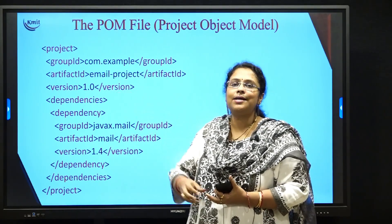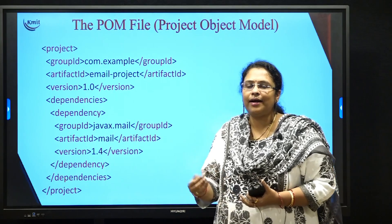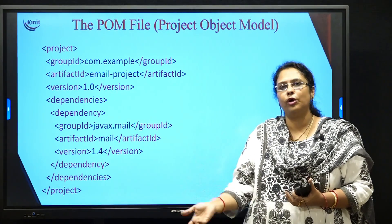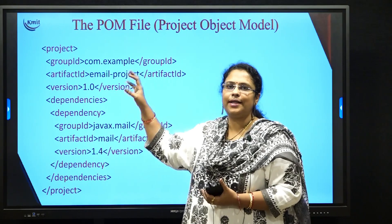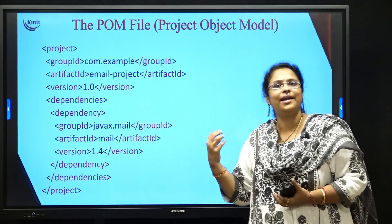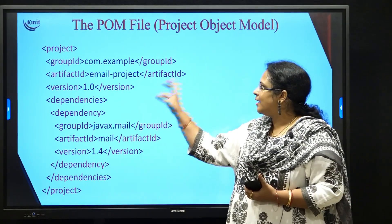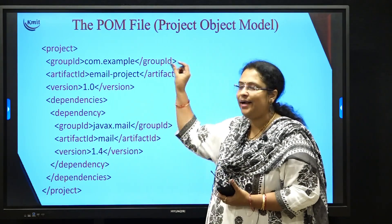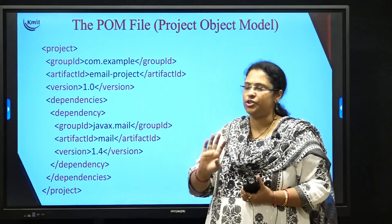The next one is artifact ID, which is nothing but the title of your project. In this example, email project is the title of my particular project. So artifact ID is the title of your project and group ID is the owner of that particular project.